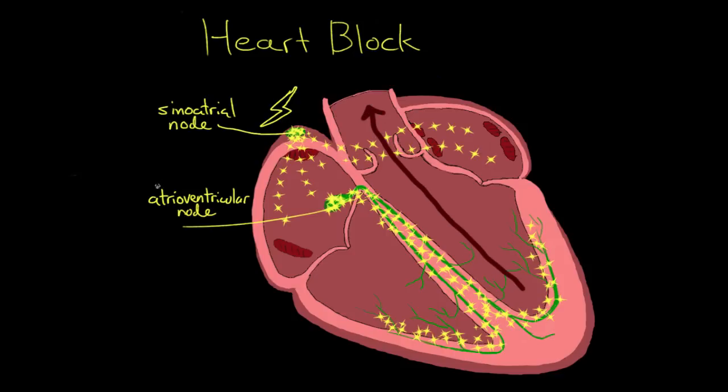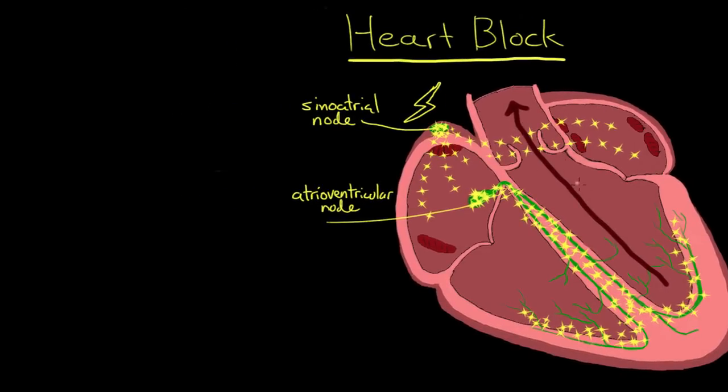But things can go wrong with this system, and that electrical signal can get disrupted. Anywhere along the path that the signal travels, injury to the heart or disease within the heart can cause problems with the passage of the signal. When this happens, a person is said to have a heart block. The end result is an inability for the heart to efficiently pump blood out to the rest of the body.